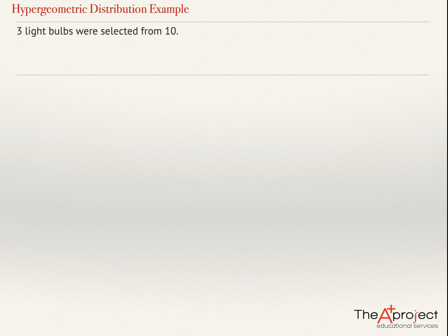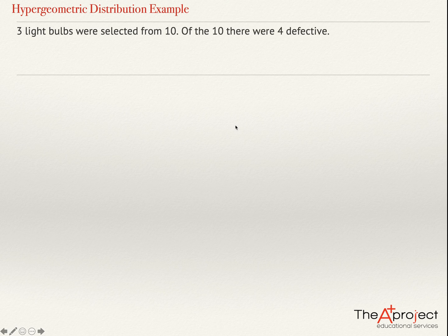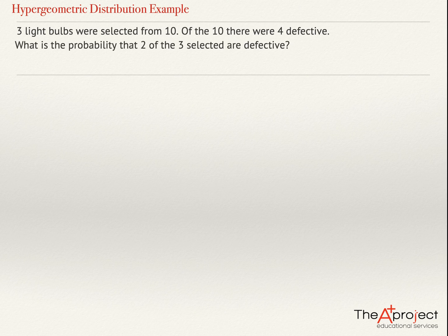Hypergeometric distribution problem: Three labels were selected from 10. Of the 10, there were 4 defective. What is the probability that 2 of the 3 selected are defective?